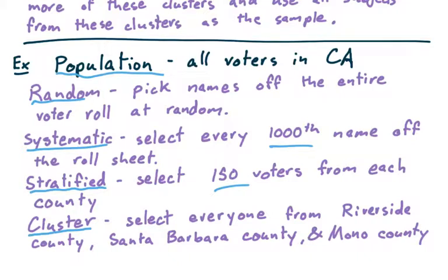As opposed to a cluster sample, we'll just say it's already divided into counties. Those are our clusters. And we'll select everyone from Riverside County, Santa Barbara County, and Mono County. Just picked those at random and said everyone from each of these three counties. So there we have sampling methods.